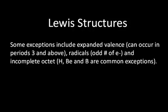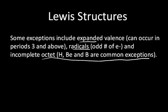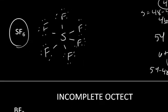Sometimes the octet rule isn't followed in compounds. You can have an expanded octet, radicals when you have an odd number of electrons, or an incomplete octet. Some common exceptions are hydrogen, beryllium, and boron. Let's take a look at some examples when we have an incomplete octet.